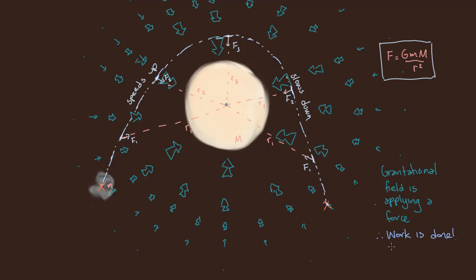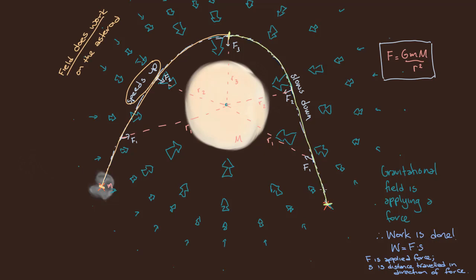Remember, the formula for work is equal to the applied force multiplied by the distance travelled in the direction of that force. So as the asteroid speeds up, it's the field itself doing work on the asteroid. As the asteroid slows down, the work done on the asteroid is negative, which means the asteroid is actually doing work back on the field.